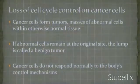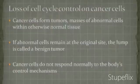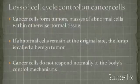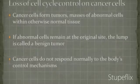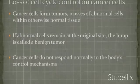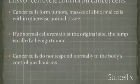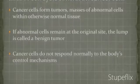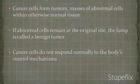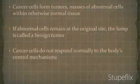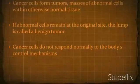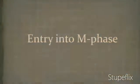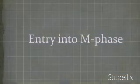Loss of cell cycle control leads to cancer cells. Cancer cells form tumors and masses within otherwise normal tissue. If the abnormal cells remain in the original site, the lump is called a benign tumor. Cancer cells do not respond normally to the body's control mechanisms. If there is a loss in the cell cycle, there will be a lead to cancer cells, skipping the G0 phase and entering into the M phase.